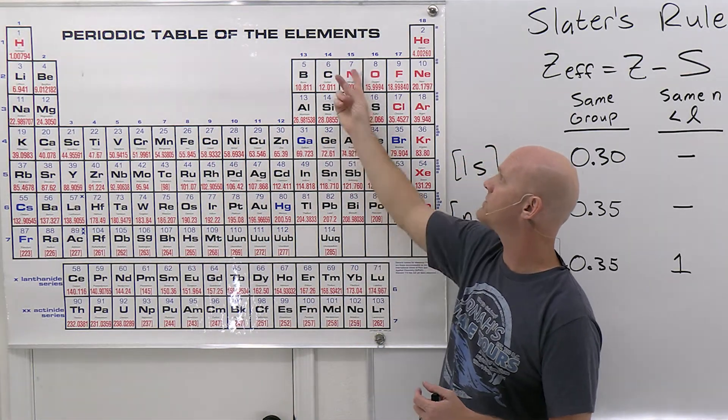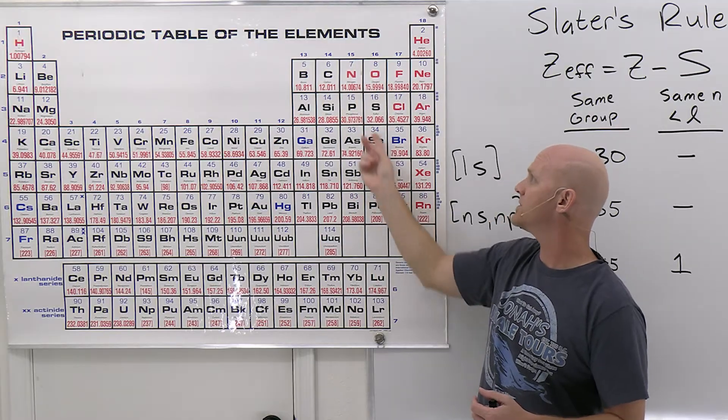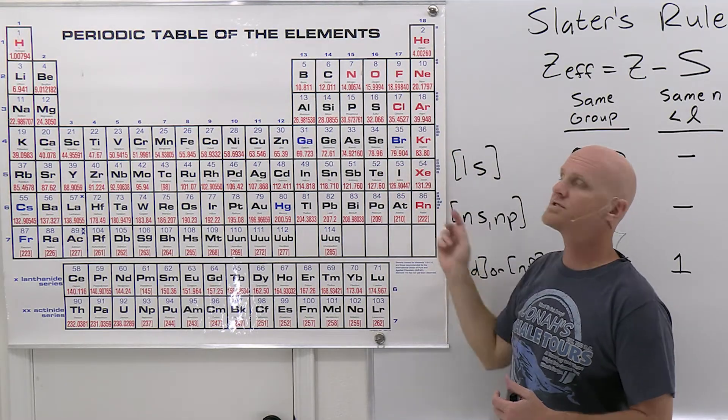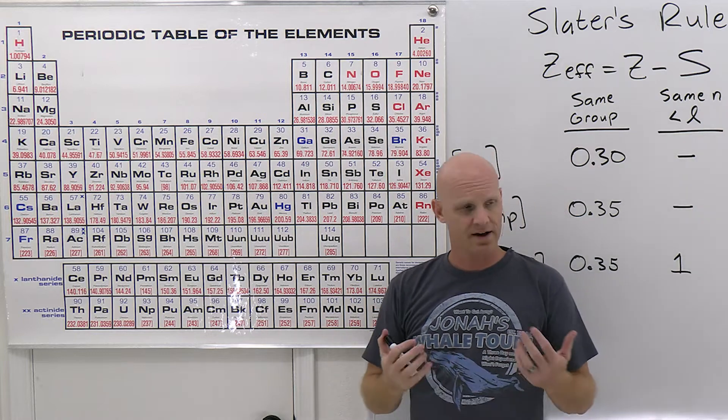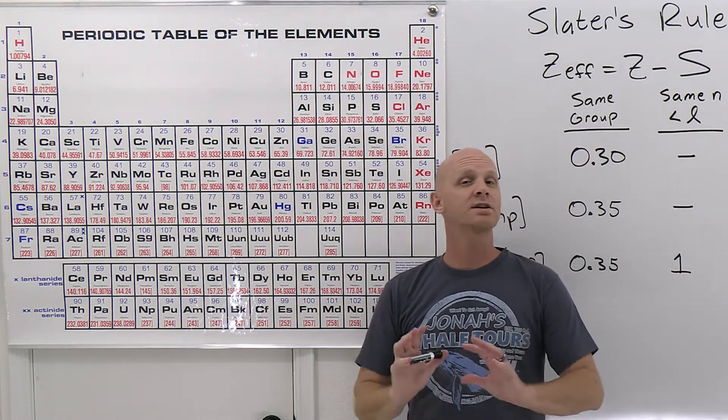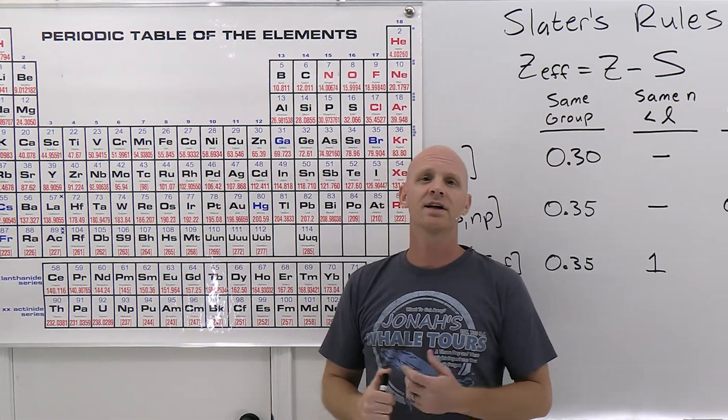Carbon's group, plus four, nitrogen's group, plus five, the chalcogens with oxygen, plus six, the halogens plus seven, and the noble gases, plus eight. So those are the effective nuclear charge approximations we used in the last lesson.